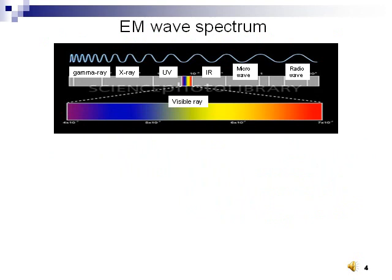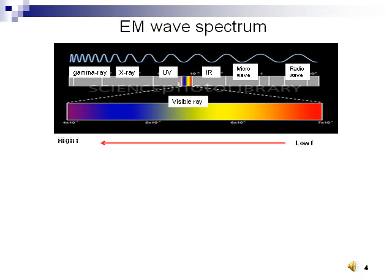EM wave consists of gamma ray, X-ray, ultraviolet, visible light, infrared, microwave and radio wave. The spectrum shows on the slide, the energy is increasing from the right to the left.